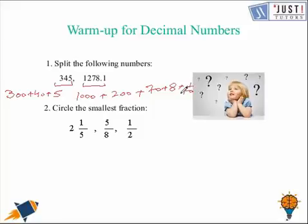Circle the smallest fraction. Among these, we need to equate the denominator and of course, we can find out that 1 over 2 is the smallest fraction of all.